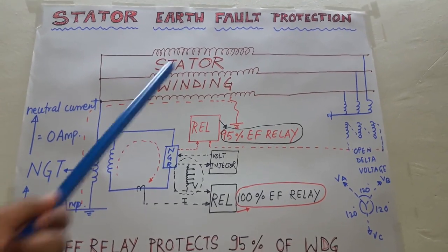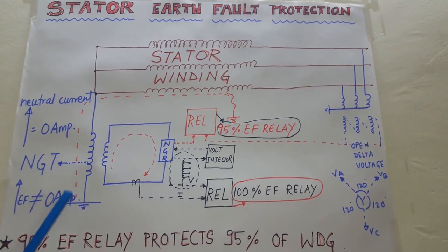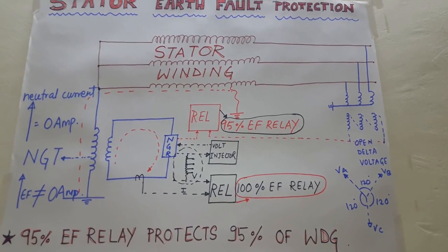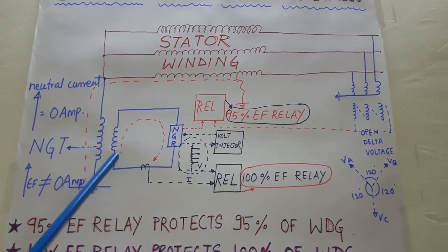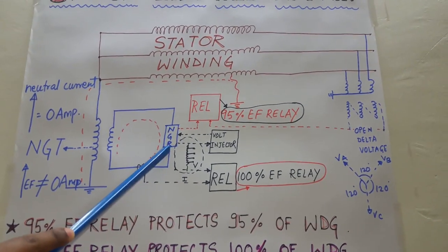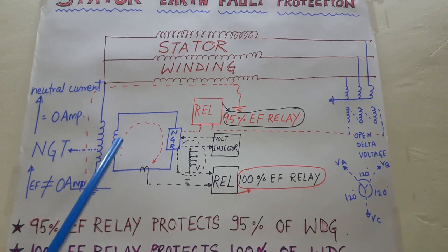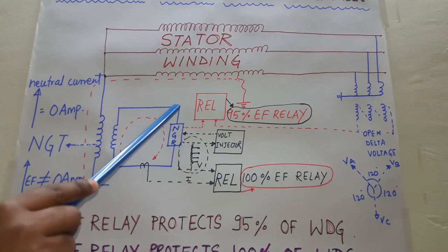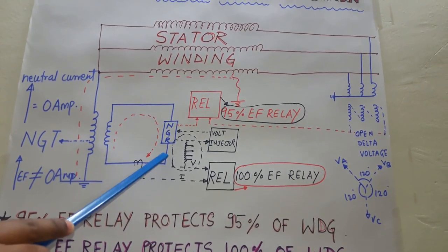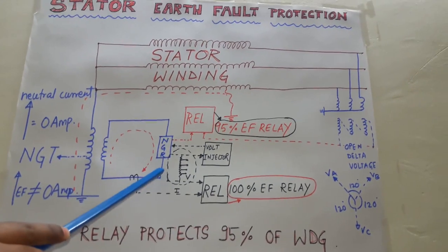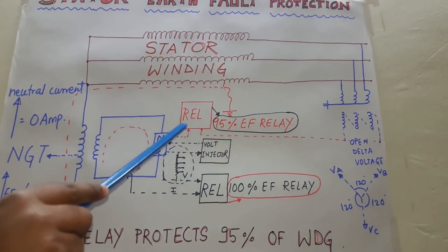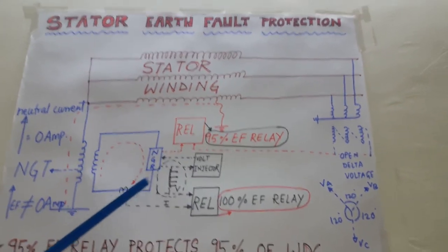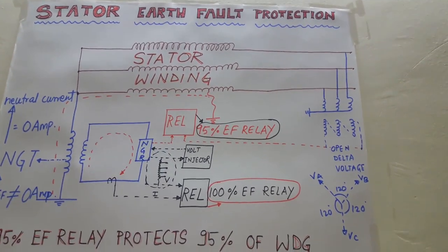Whenever any part of the stator winding is getting earthed, a current is seen in the neutral path — a current is flowing. This transformer is connected to the NGR, so when current flows through the primary winding, a current is seen in the secondary winding. Due to this current and the resistor present, a voltage drop is created across the resistor. This voltage drop is fed into the earth fault relay. In the earth fault relay there is a setting of voltage — if the voltage drop exceeds that setting, the relay will operate on earth fault.